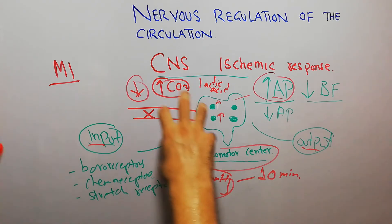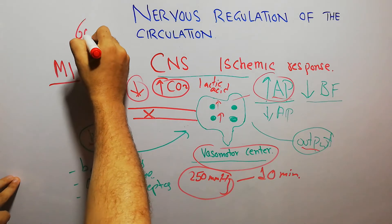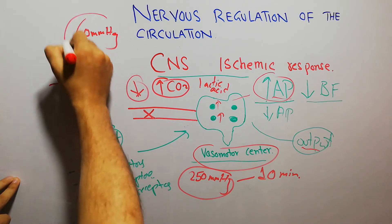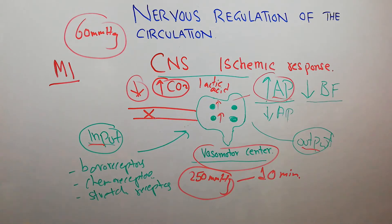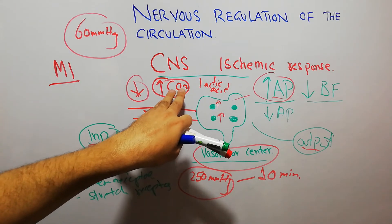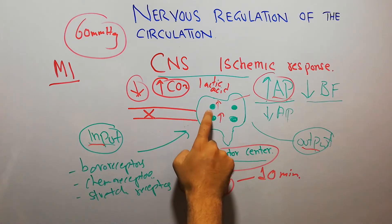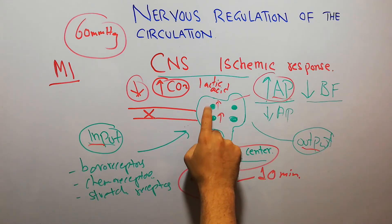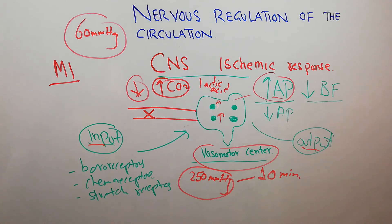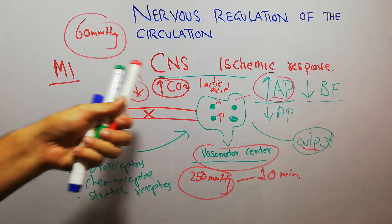This CNS ischemic response only occurs when arterial pressure falls below 60 mmHg. A small decrease in arterial pressure will not trigger it. Only a fall below 60–70 mmHg causes enough accumulation of lactic acid and carbon dioxide in the vasomotor center for it to detect that blood flow is critically compromised. It then strongly stimulates the vasoconstrictor and vasodilator areas to increase arterial pressure, helping maintain circulation during brain ischemia.